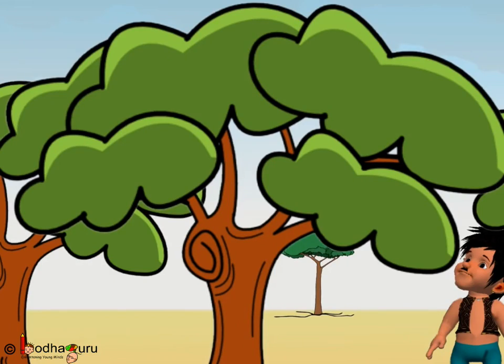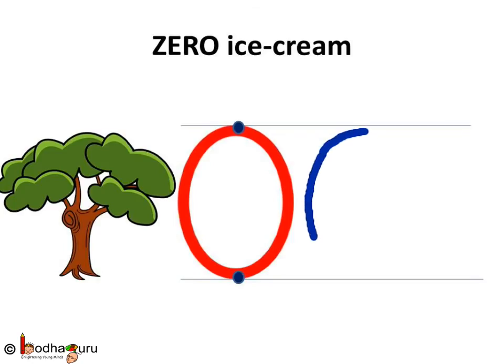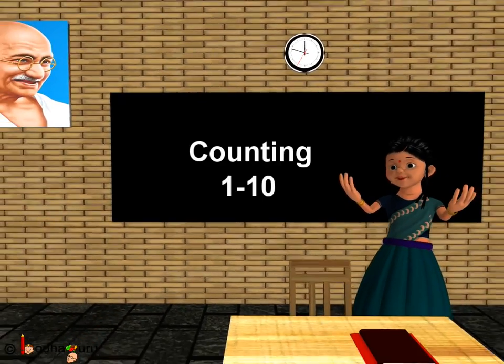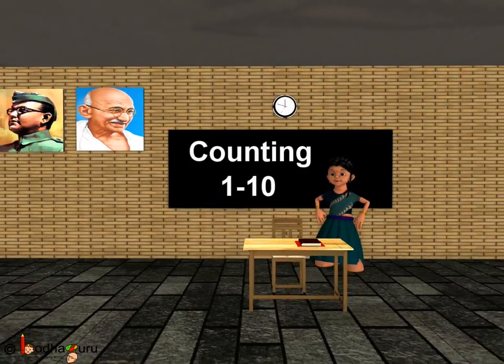Now, no ice creams are left on the tree. So, the tree has zero ice creams. Zero. Now, you know how to count one to ten. Hooray! Bye-bye, kids!